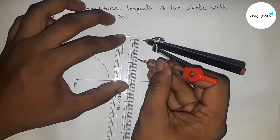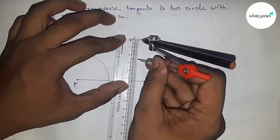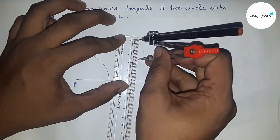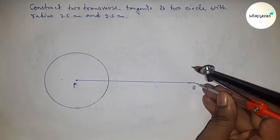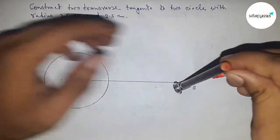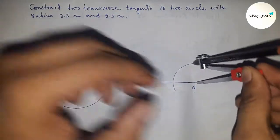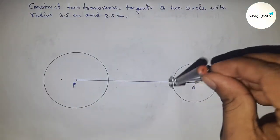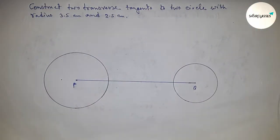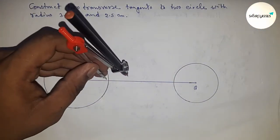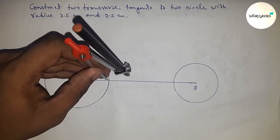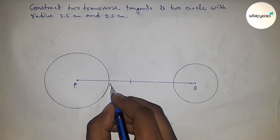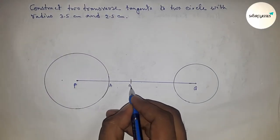Next, taking the radius 2.5 and constructing a circle on the point Q. Drawing the circle on point Q with radius 2.5, and with the same radius cutting the line to mark points A and B.